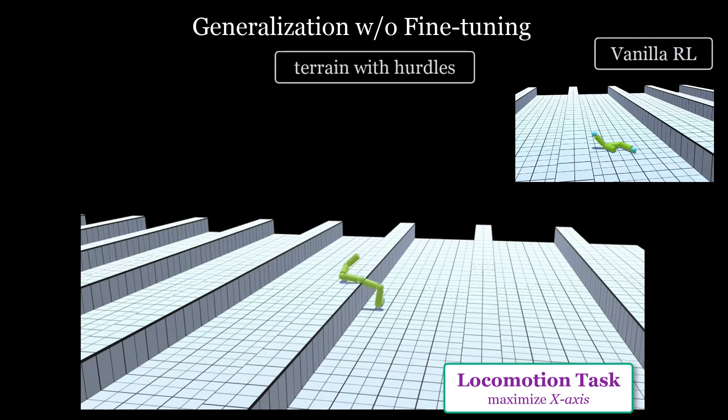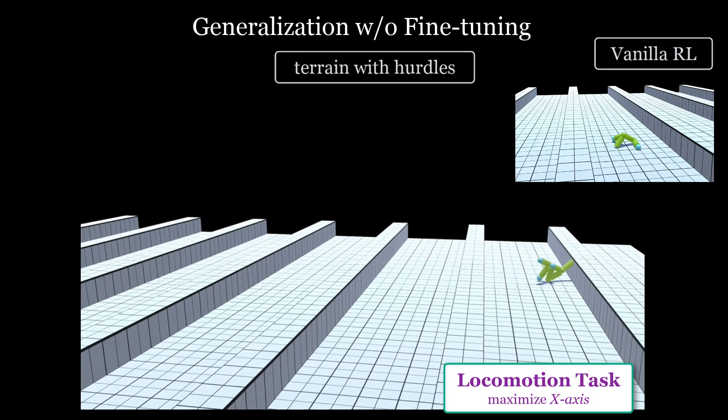Our agent is able to generalize even if we change this bumpy environment to one with hurdles, and this is in contrast to the vanilla RL agent, which is shown on the top right.